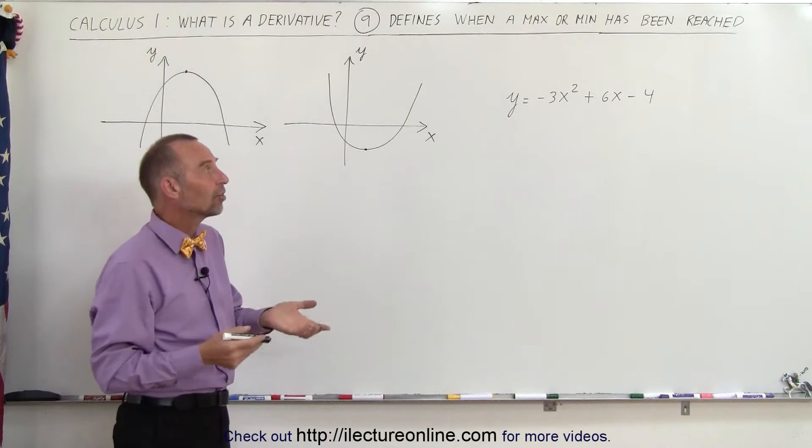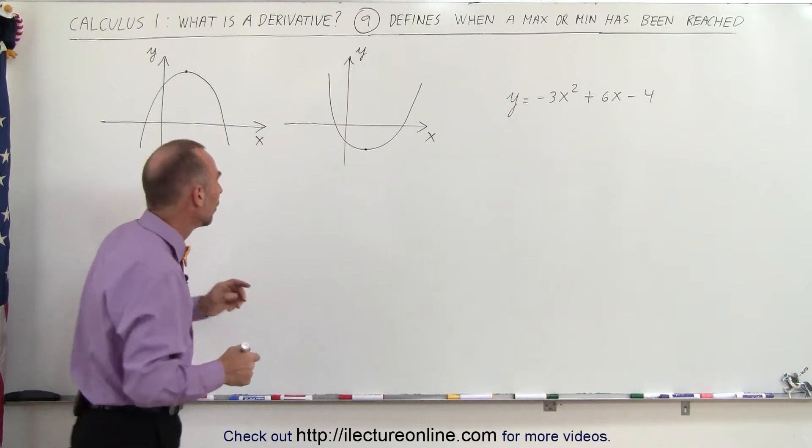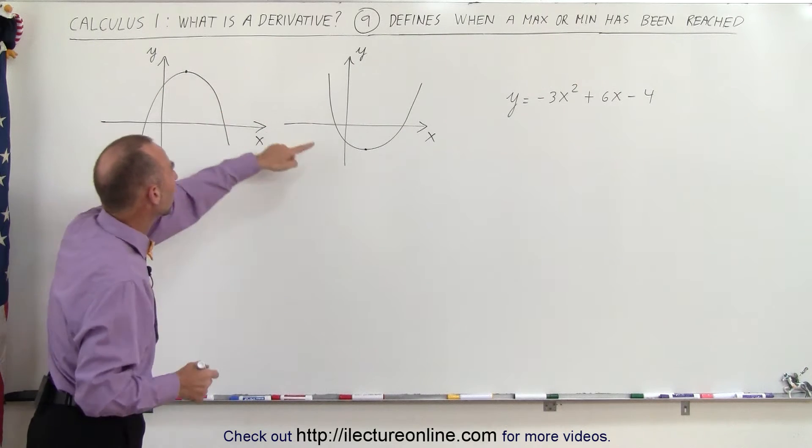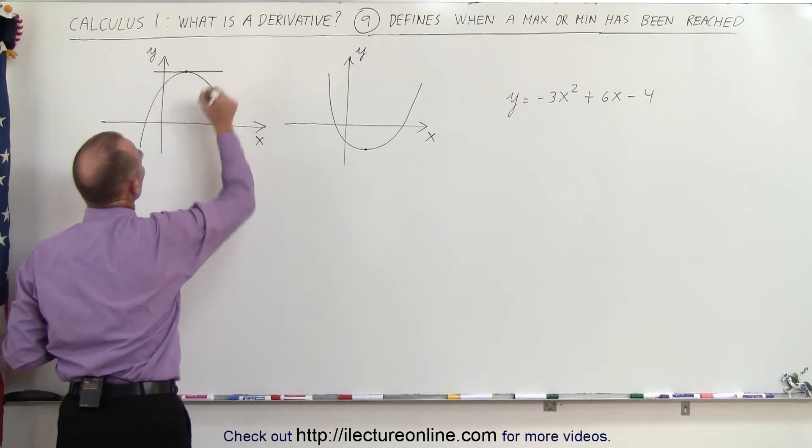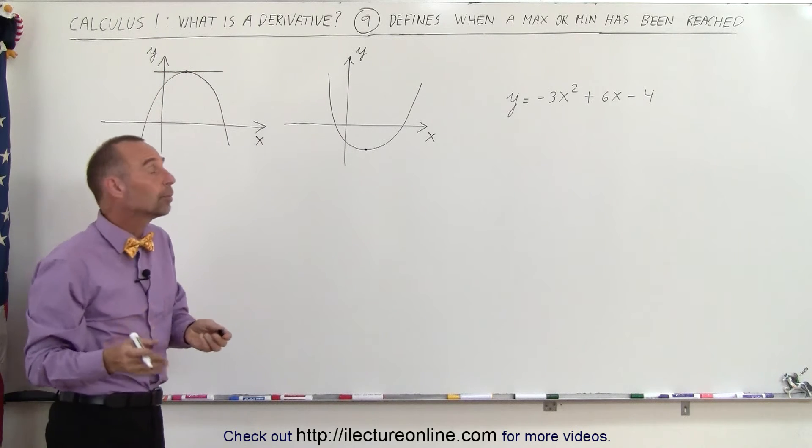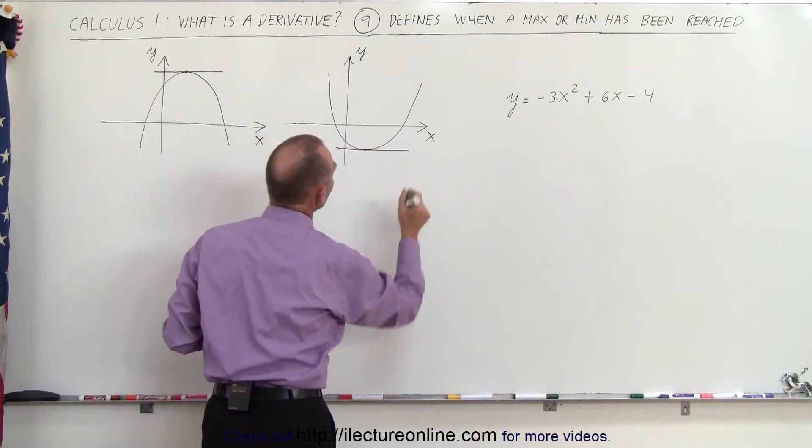There you have a function y equals minus 3x squared plus 6x minus 4. Remember what is the slope at those two locations? Notice that the slope over here can be represented by a horizontal line because the tangent there will be a horizontal line. The slope over here can be represented by a horizontal line.